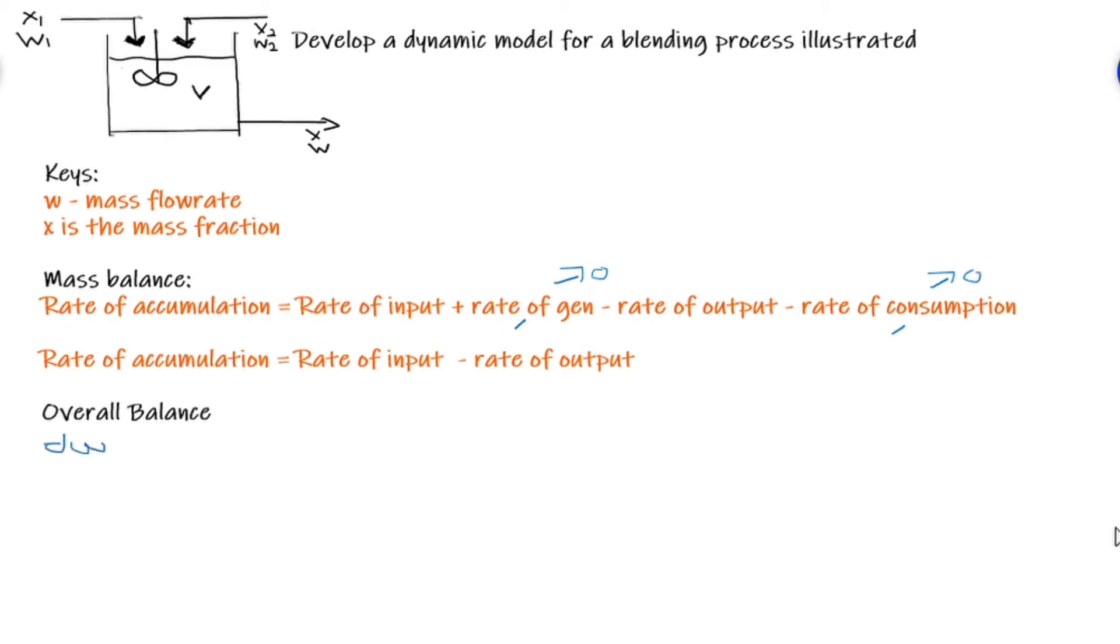First things first, I'm going to start with my overall balance. For my overall balance, I am going to represent the rate of accumulation as dW over dt which can be equated to W1 plus W2 subtracting W.